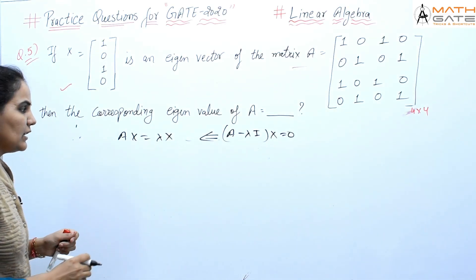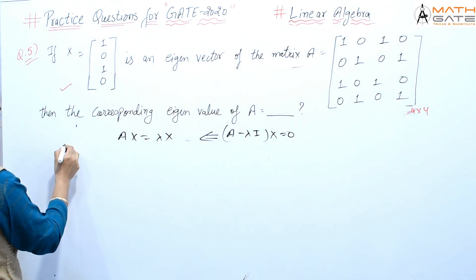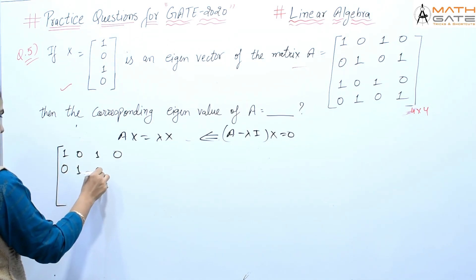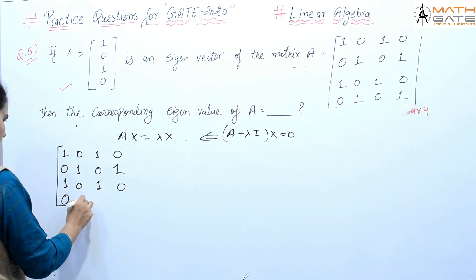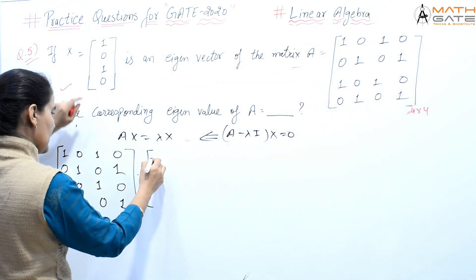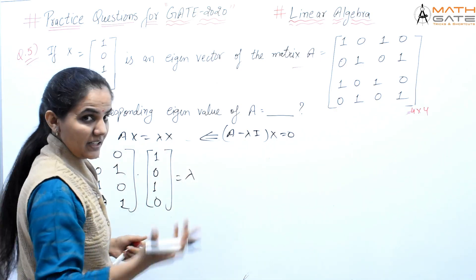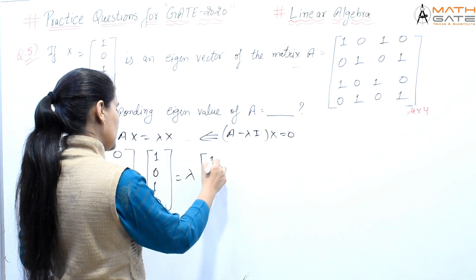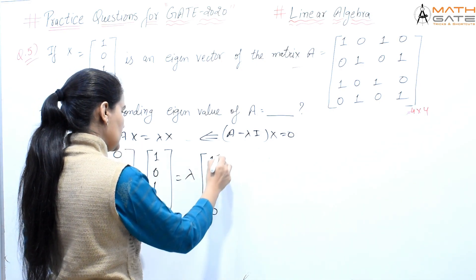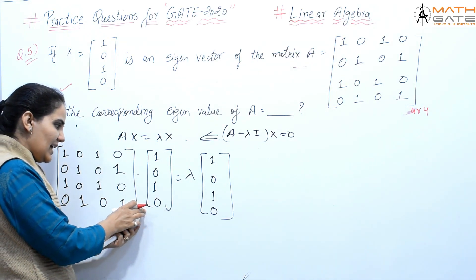But we haven't learned to extract eigenvectors that way. We discuss eigenvectors using the form A×x equals lambda×x, which actually comes from A minus lambda I into x equals zero. We'll find the eigenvector for this question very quickly. What is A? Our given matrix is [1,0,1,0; 0,1,0,1; 1,0,1,0; 0,1,0,1] times x, where x is [1,0,1,0], equals lambda times x.